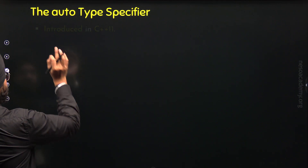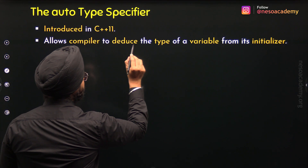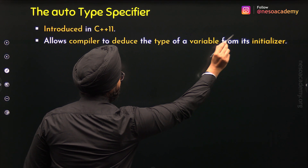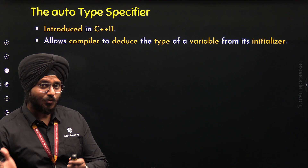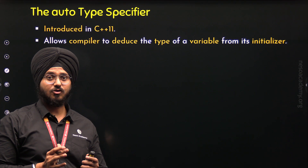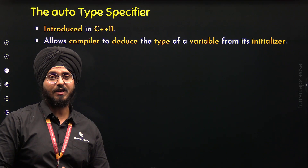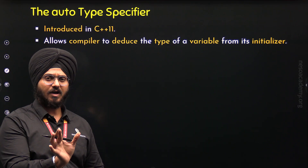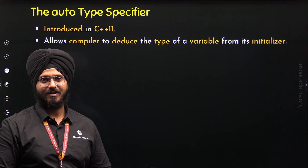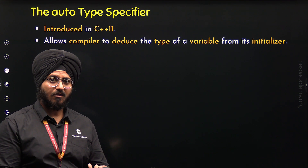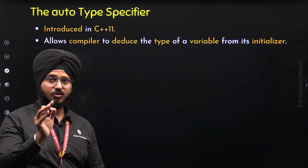Auto Type Specifier was introduced in C++11 and it allows the compiler to deduce the type of a variable from its initializer. So Auto Type Specifier allows the compiler to deduce the type of a variable automatically, without the need of us typing the type of the variable. With Auto, the type of the variable will be automatically deduced by the compiler, and this is done based on the initializer.